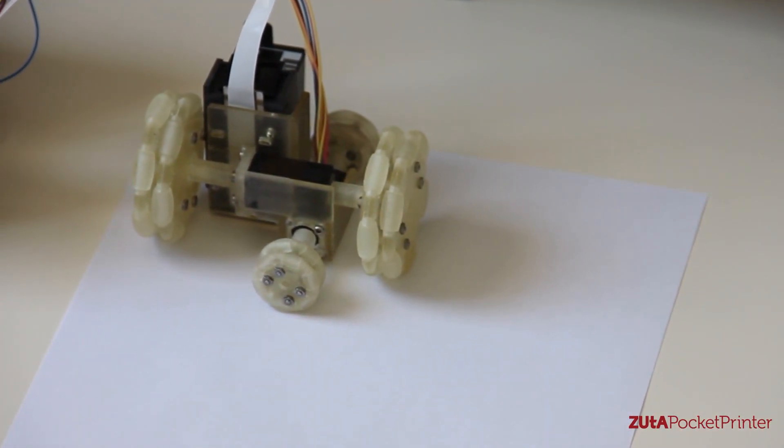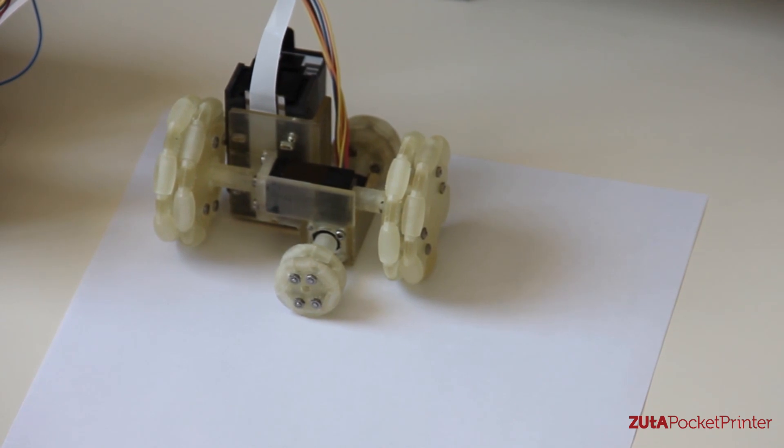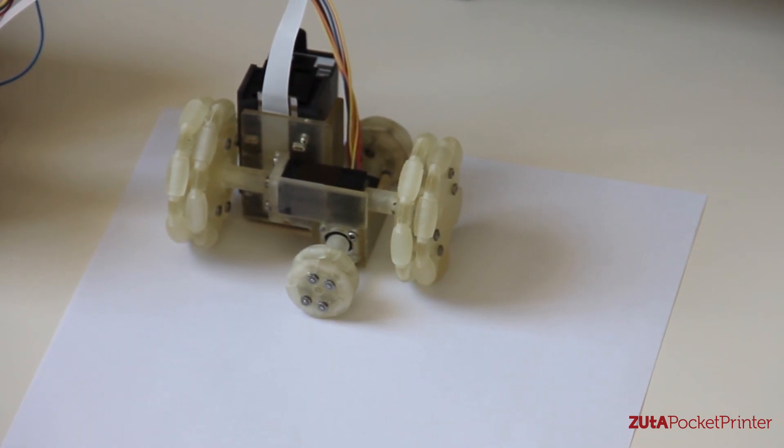Our initial prototype is aimed for grayscale images and text. The prototype aims for printing a page in under a minute.